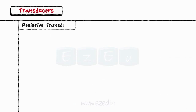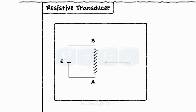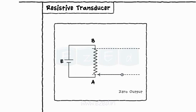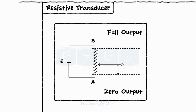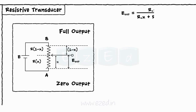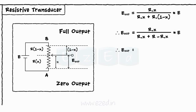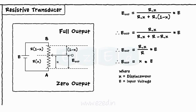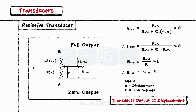Let's start with a resistive transducer. A circuit of a resistive transducer is as shown below. As seen in the diagram, a slider is free to move from end A to end B. At end A, we get zero output and at end B, we get full or maximum output. The output voltage is obtained between position A and the slider position. Using the voltage divider rule, E out equals X into E, where X is the displacement and E is the input voltage. Thus, the output of a transducer is proportional to the displacement.